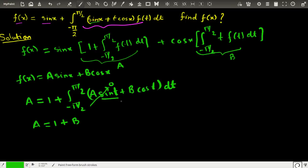So basically we have sin(π/2) minus minus sin(π/2), which basically means 2, so we have the first equation which is A is equal to 1 plus 2B.